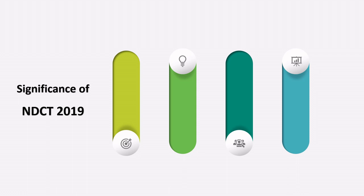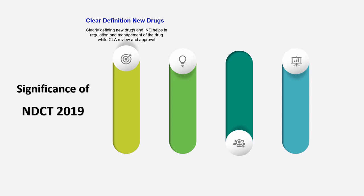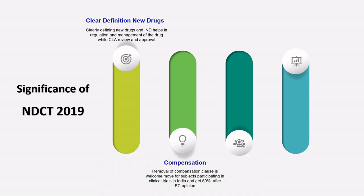The NDCT Rules 2019 have clearly defined new drugs, which helps the regulatory authority — CDSCO — in identifying the drug, its mechanism of action, and its intended use, making it easier for the Central Licensing Authority to review and approve drugs. On compensation, the removal of the complex compensation clause has been a great help for participants. When an SAE occurs and the EC gives their opinion within 15 or 30 days, the subject receives 60 percent of the compensation after the EC opinion, making the process faster and easier.